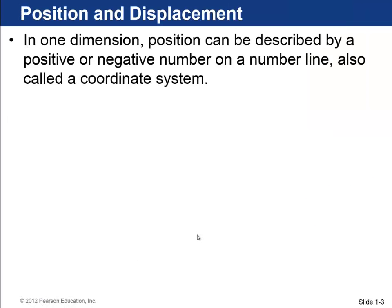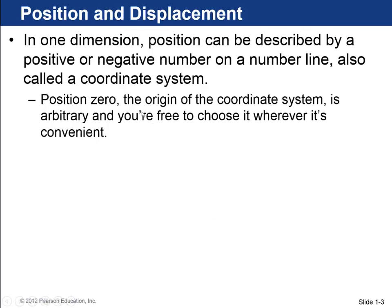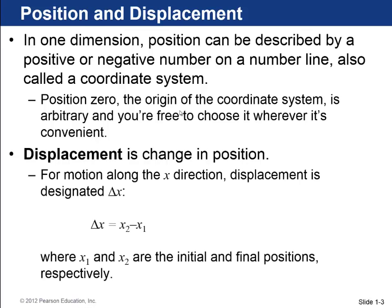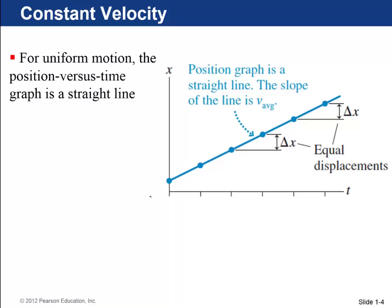In one dimension, a position can be described by a positive or negative number on a number line — a distance measurement on a coordinate system. The position zero, called the origin, is arbitrary; you can choose it wherever is most convenient. Displacement is the change in your position on that coordinate system. So if it's the x-axis, and x1 and x2 are the initial and final positions, then delta x — the Greek letter delta meaning 'change in' — equals the final position minus the initial position. If you plot x versus time, that's a position versus time graph.